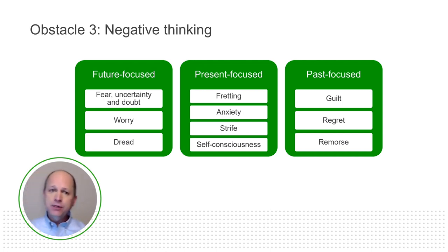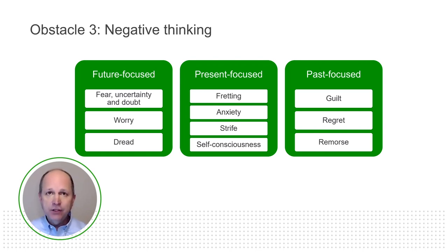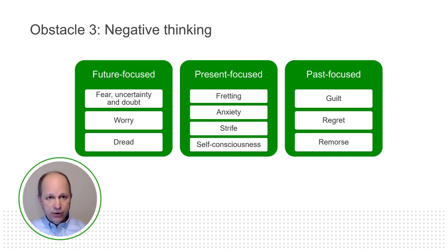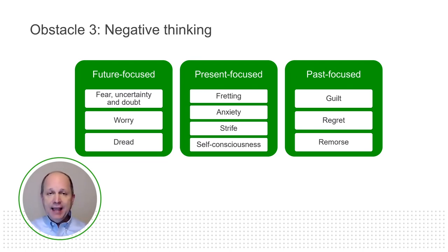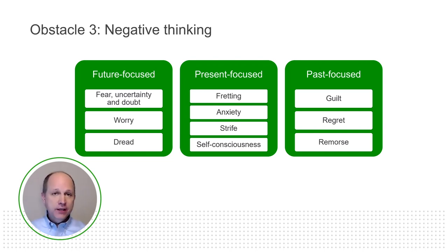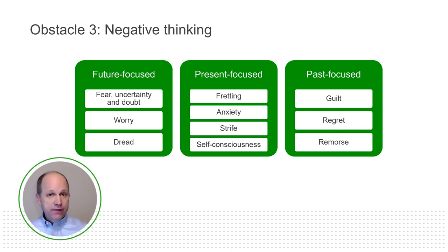Obstacle number three is the obstacle of negative thinking. Negative thinking takes on three different time-based horizons: future-focused, present-focused, or past-focused. If I am future-focused in my negative thinking, I am plagued with fear, uncertainty, doubt, worry, and dread. I have some sayings about worry and dread: worry is the interest paid on borrowed trouble, and the dread of a thing is always worse than the thing itself.